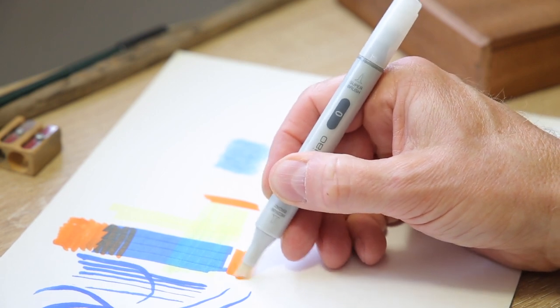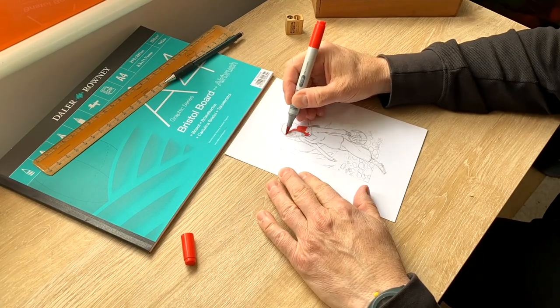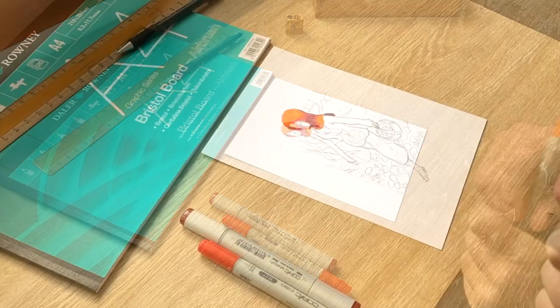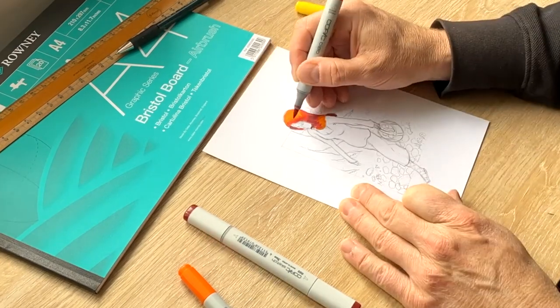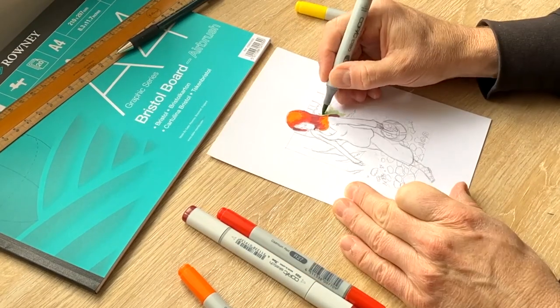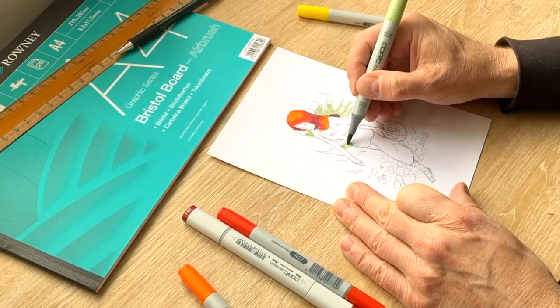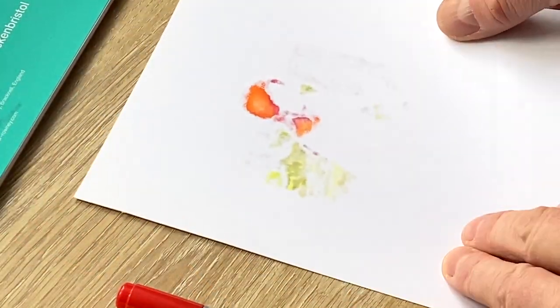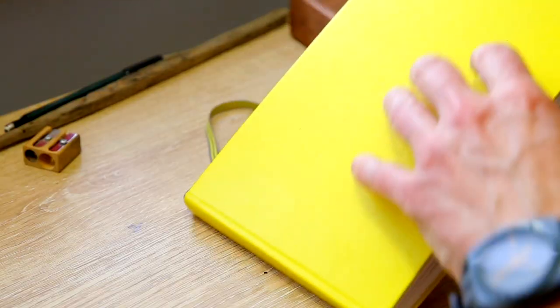With alcohol inks and particularly in markers the color will seep through a lot of papers and so you'll need to bear that in mind when choosing your materials. Yes there are specific marker pads that don't bleed through. However personally I don't like their surface and feel so I use all sorts of paper and just take account of the possible bleed through.